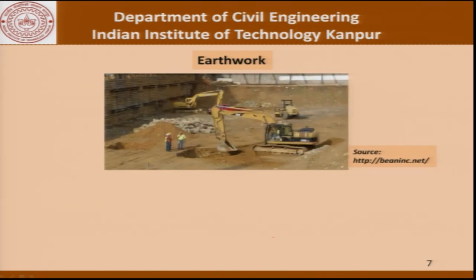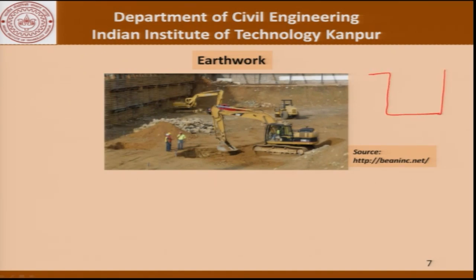The first item is earthwork. This picture shows earthwork being carried out at a typical site — illustrative of what is involved. There is a certain height and area involved. The surplus earth generated will have to be removed and dumped somewhere, so how far is the dumping ground from the site? Sometimes when we carry out an excavation, the sides need to be properly supported to ensure they do not cave in — either we support the sides or we allow for a slope.